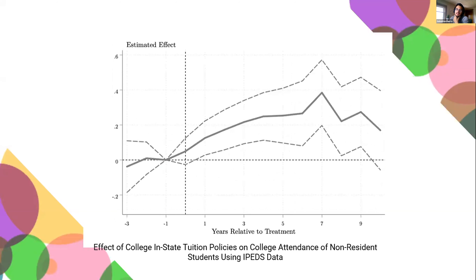Here is a chart showing the effects at the college level using the IPEDS data. You can see a very stark trend: attendance increases very immediately after the passage of this policy and hovers at around a 40% increase. The outcome here is log attendance of non-residents, so this is a percentage change, not percentage points. This tells the same story and adds to the evidence.